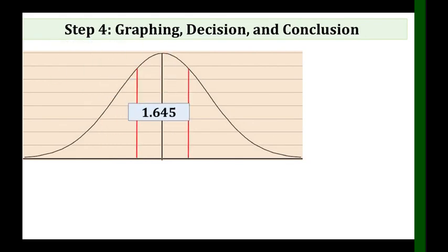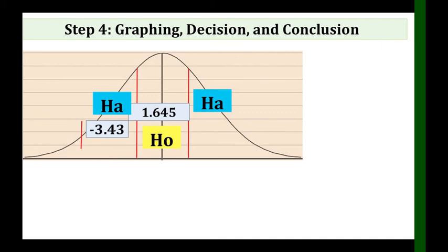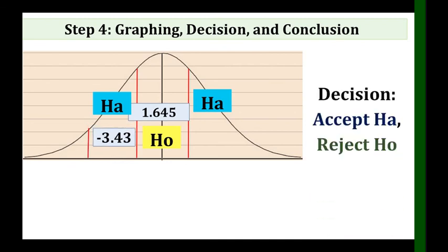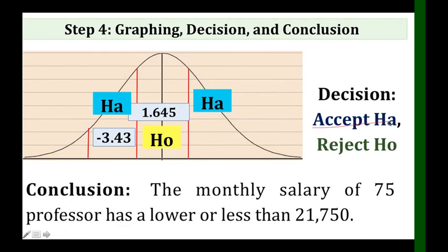Using the normal curve, our critical value from Step 2 is 1.645. If the computed value is inside the critical region, accept Ho; if outside, accept Ha and reject Ho. Our computed Z is negative 3.43, which falls outside, so the decision is to accept Ha and reject Ho. The conclusion is: the 75 college professors have lower salaries than the rest, or their mean monthly salary is less than 21,750.